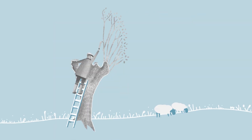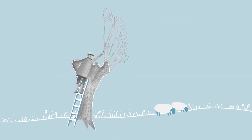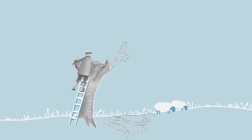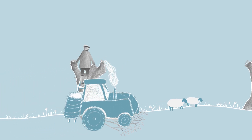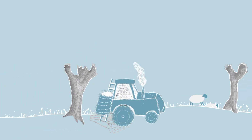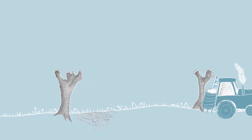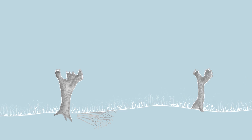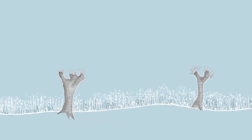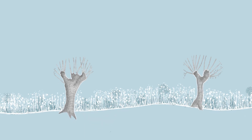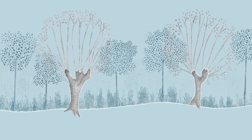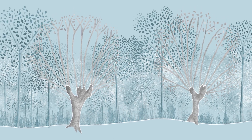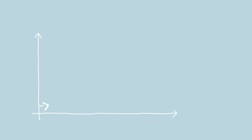In ecology, the term abandonment refers to the process when human activity or management ceases in an area, allowing nature to regain control. Following abandonment, an ecosystem undergoes natural changes in species composition and structure, often developing into a forest over time — a phenomenon called succession.